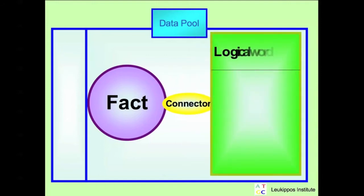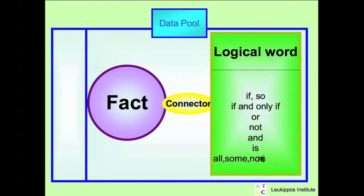Logical words are if so, if and only if, or, not, and, is, and all, some, none, and is like.